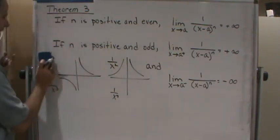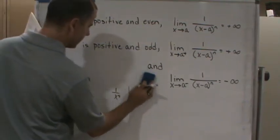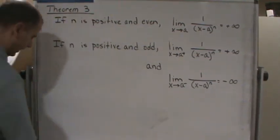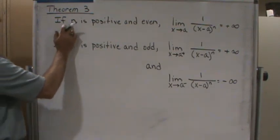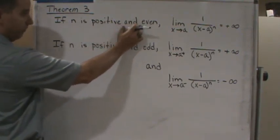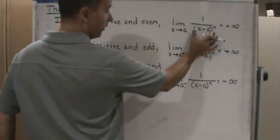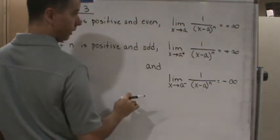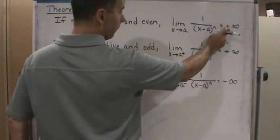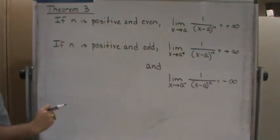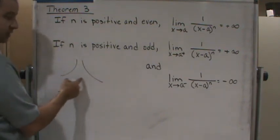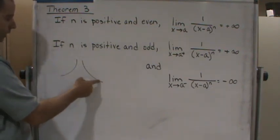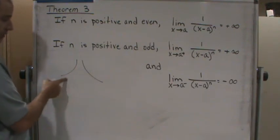So what we can say is, what this theorem says, is that if we have reciprocal functions of different powers, and so if n is positive and even, then this limit here will tend to go to positive infinity. Why? Because it looks like this, and of course it's heading the same direction. Okay?